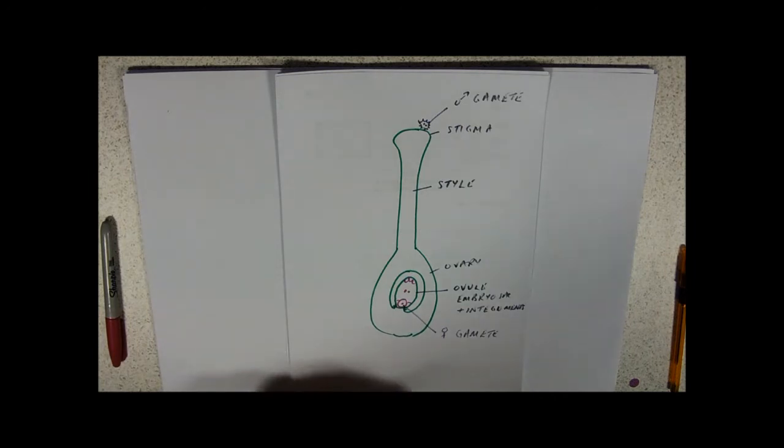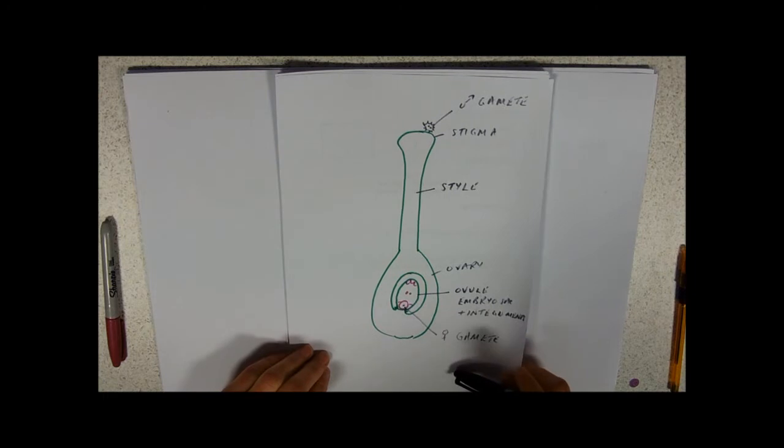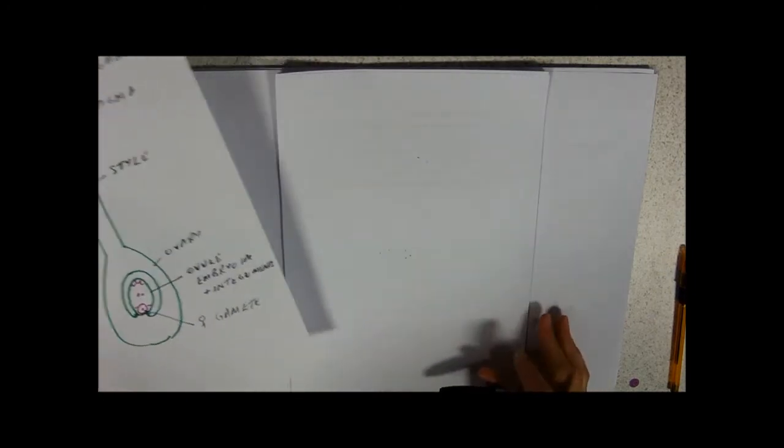This is where the tube nucleus comes into its own really. We said earlier that the tube nucleus controls the growth of the pollen tube, but we don't even know what a pollen tube is yet.